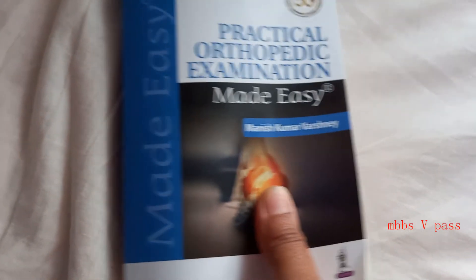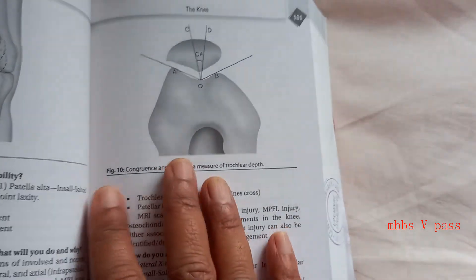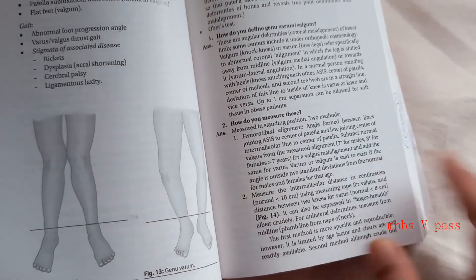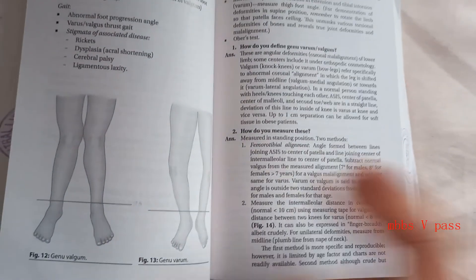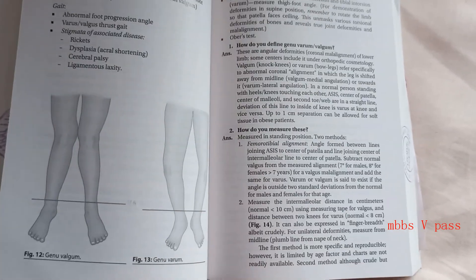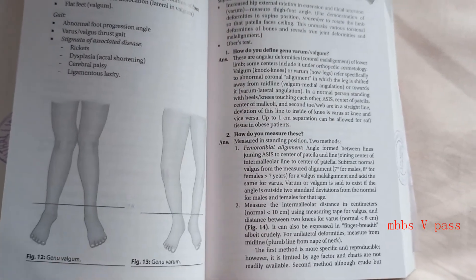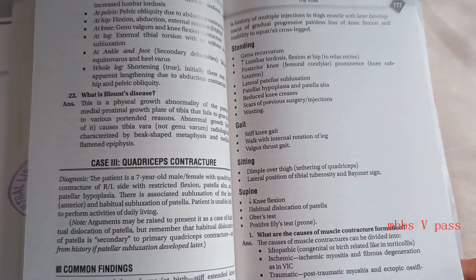How is it going people? We are looking at this book, Practical Orthopedic Examination Made Easy. So if somebody asks you congruence angle, this looks more like a PG level book, but anyways at MBBS level some things at least you should know. So here they have put the photo of genu valgum, genu varum. At least anatomy you should know. What are the quadriceps muscles? They will ask you those four muscles.